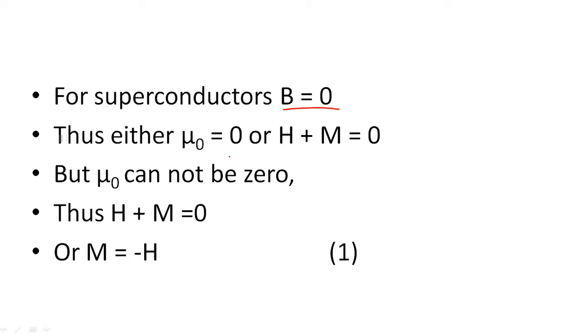Thus, either μ₀ equals 0 or H + M equals 0. But μ₀ cannot be 0 because μ₀ is magnetic permeability of free space. It has value of 4π × 10⁻⁷.